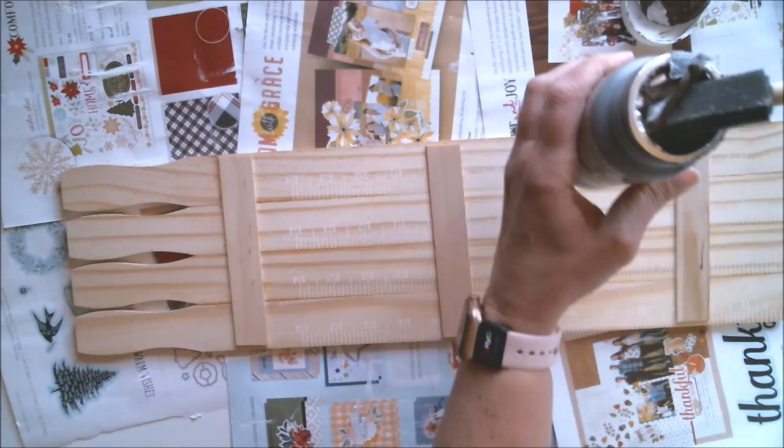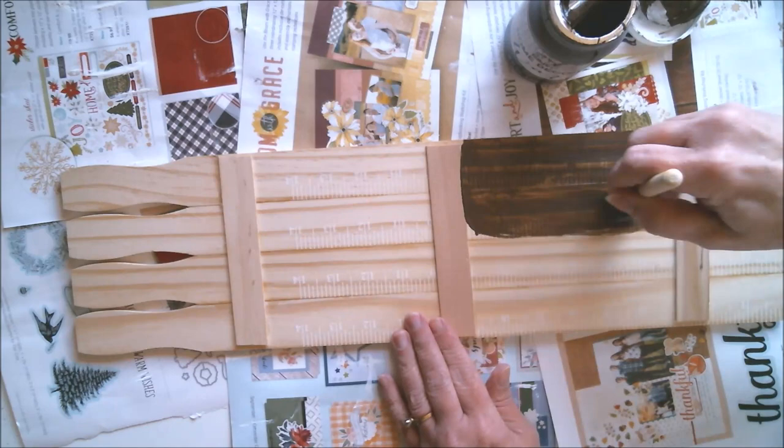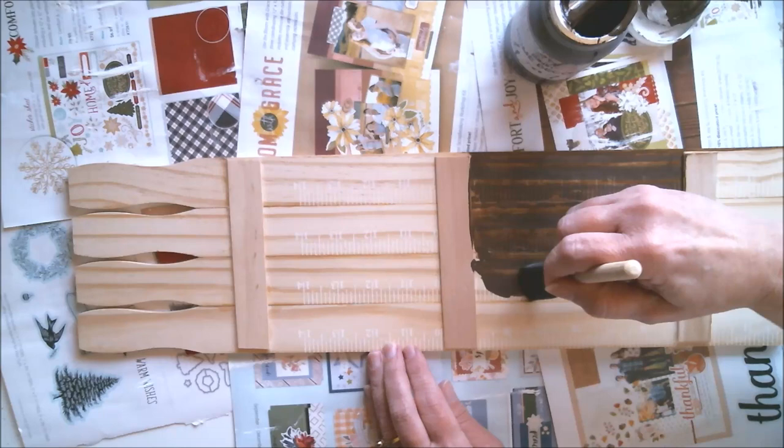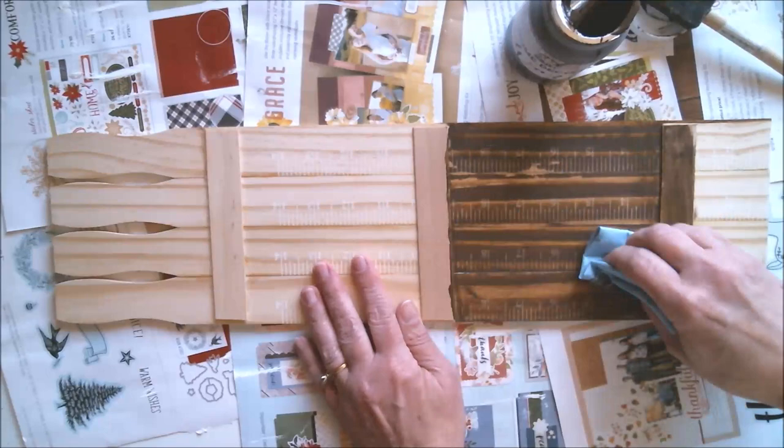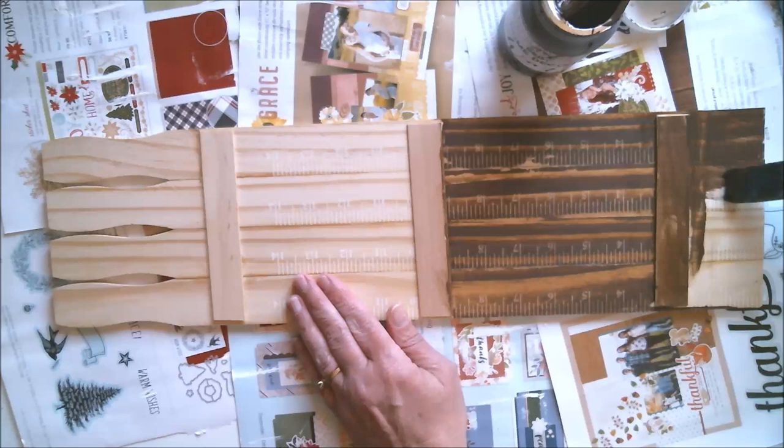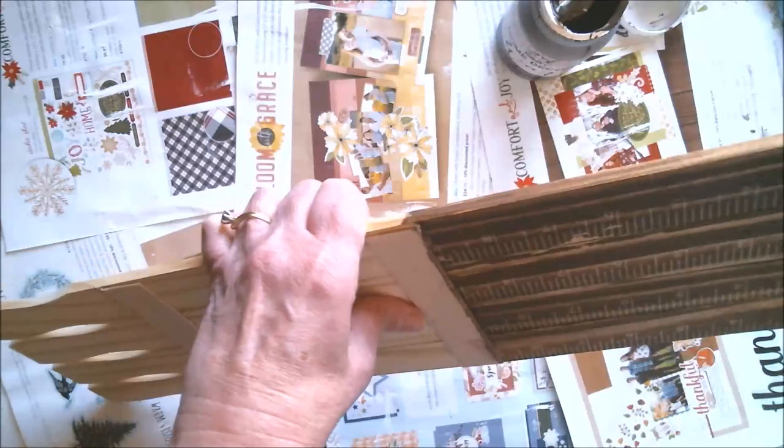Now it's time to start staining things. I'm using Folk Art Home Decor Antique Wax. I have no idea why I started in that section of the board, but it doesn't matter because I'm doing the entire piece. For right now I'm only doing the back side. I'm just painting it on and then wiping it off. I really love this wax stain because it's not nearly as messy as regular stain and cleans up so easily with just soap and water. I don't even need to wear gloves. When it's done I think it looks absolutely beautiful. I'll do the front side later.